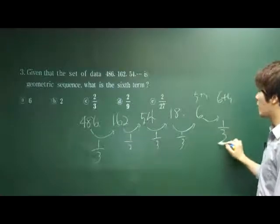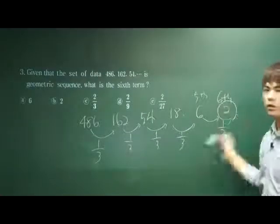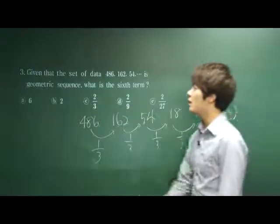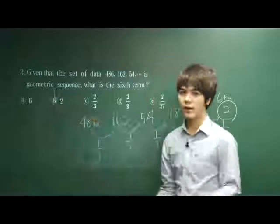The question is asking you the 6th term. Divide by 1 over 3, we get 2. Therefore, the correct answer for this number 3 got to be 2, B is our correct answer.